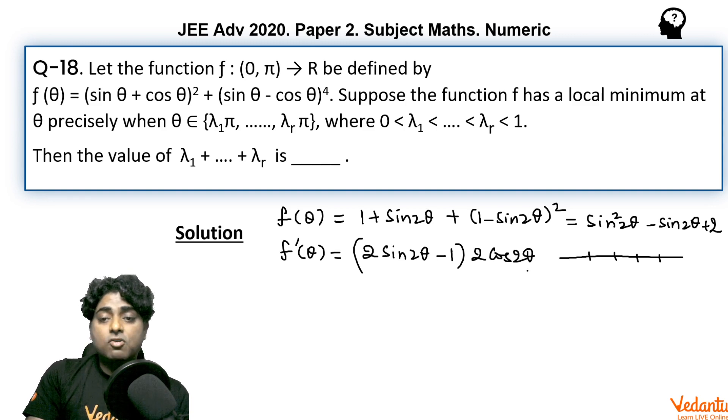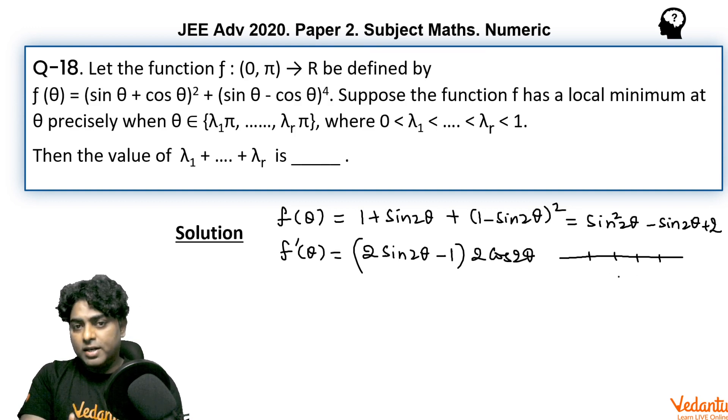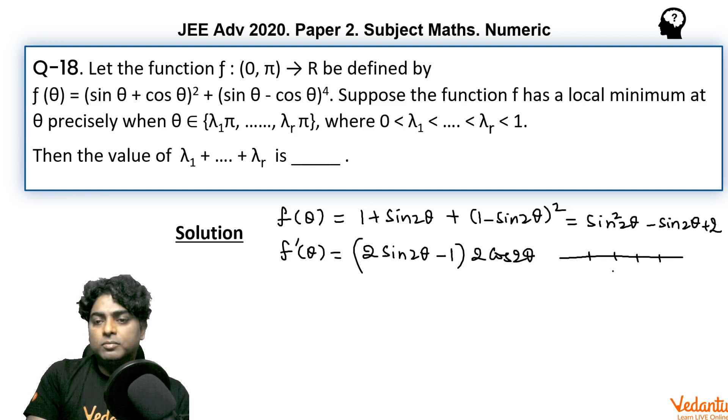The angles at which cos would be 0 are π/2 and 3π/2. This is for 2θ; for θ it is π/4 and 3π/4. The angles at which sin is 1/2 are π/6 and 5π/6. This is for 2θ; for θ it is π/12 and 5π/12.